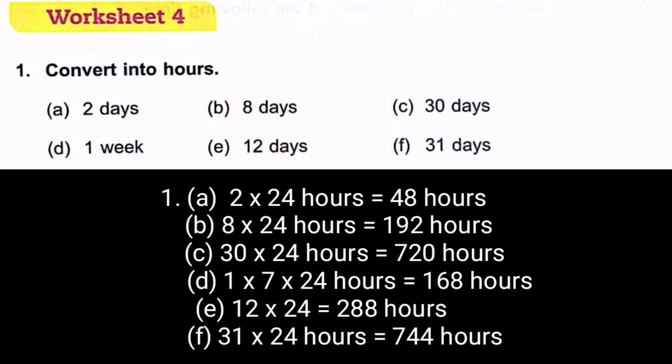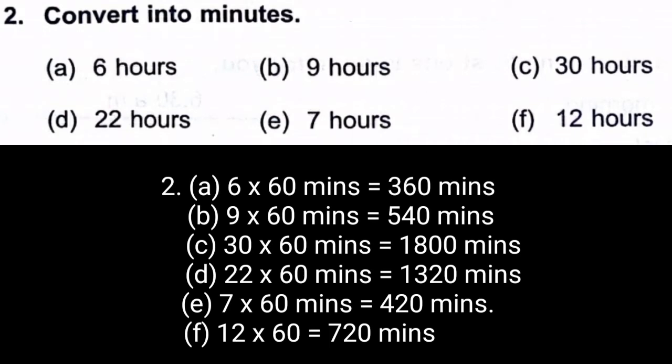Question number 2: Convert into minutes. One hour equals 60 minutes, so 6 hours = 6 × 60 = 360 minutes. Write all the answers properly — just multiply the hours by 60. The remaining questions (b), (c), etc. are done similarly.